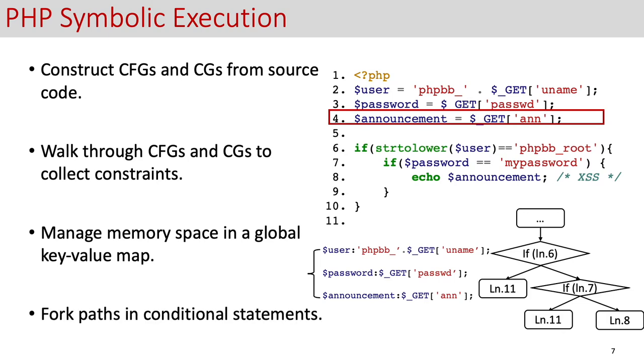For branches, currently we simply fork the paths in the conditional statements. This might potentially lead to path explosion, but we think this is a general and orthogonal research problem. After the PHP symbolic execution, we collect a series of PHP constraints, for example like this one.